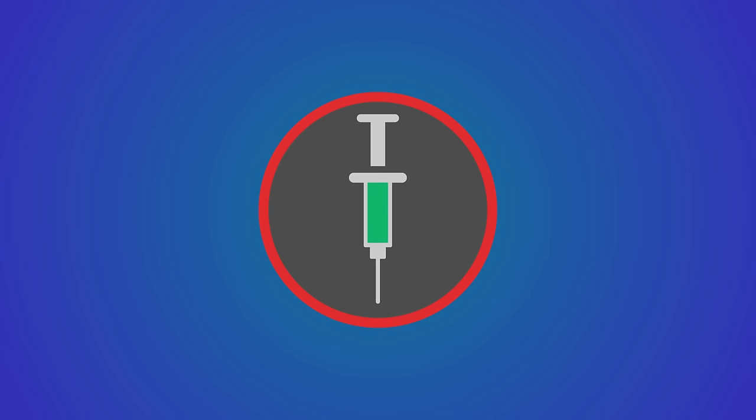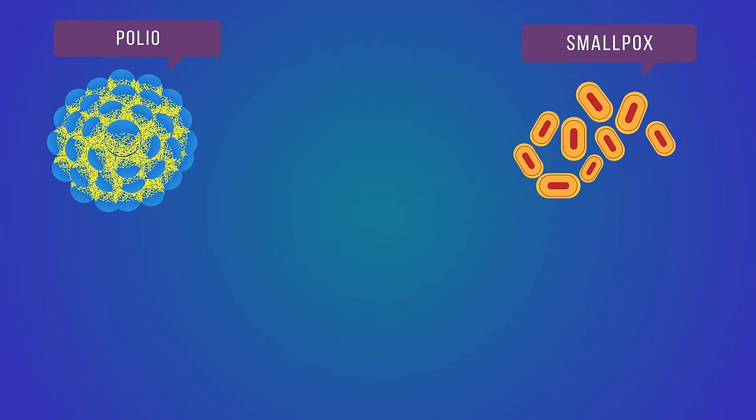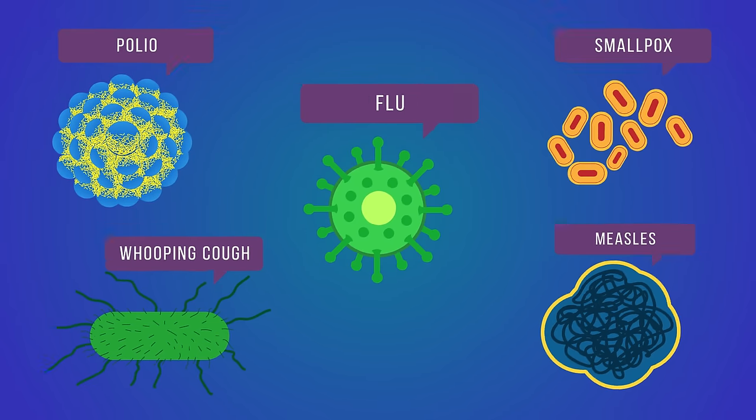By taking advantage of immunological memory in this way, vaccination prevents and controls the spread of a wide range of illnesses, including polio, smallpox, whooping cough, measles, and the seasonal influenza virus.